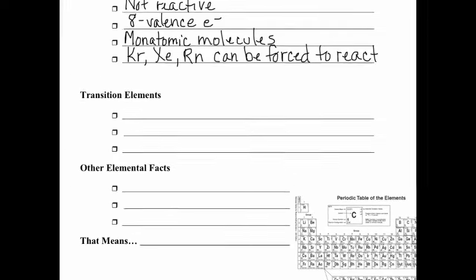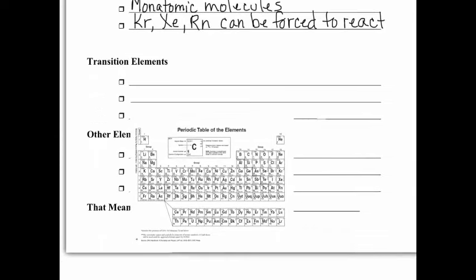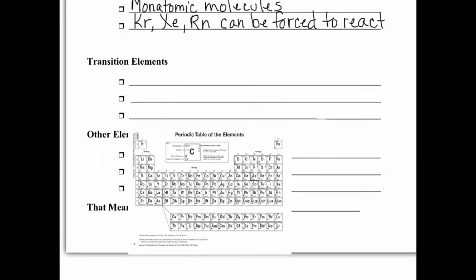Now we're going to go back again to transition elements. So these are the ones that are in groups 3 through 11. Notice I didn't include group 12. We don't include group 12 because they aren't technically transition elements. So transition elements are called transition elements because they're actually the ones that are gaining electrons in their D sub-levels. So these 3 through 11, they have some unpaired electrons in the D sub-level. And because of that, they do some interesting things.